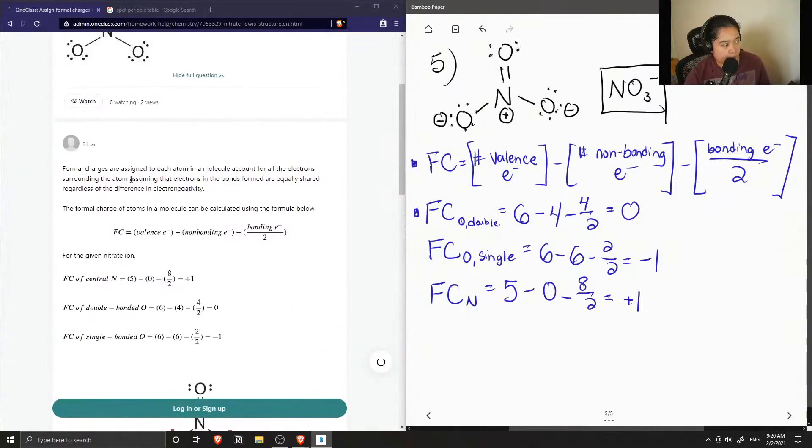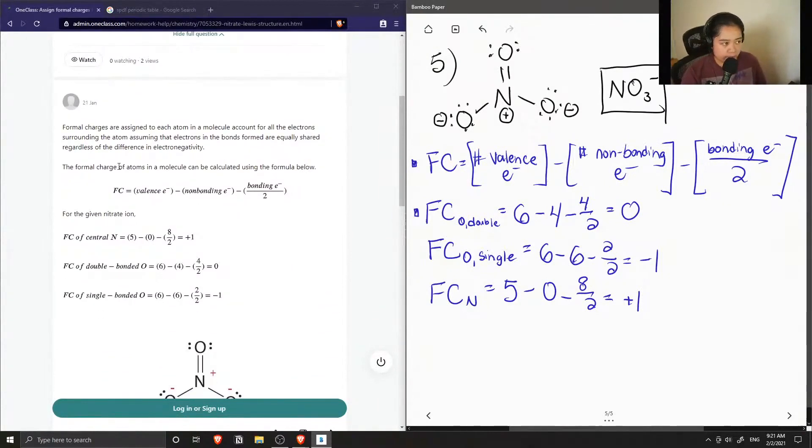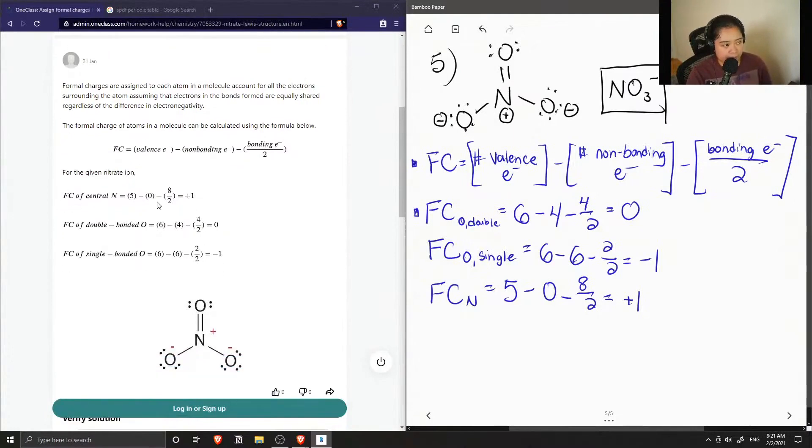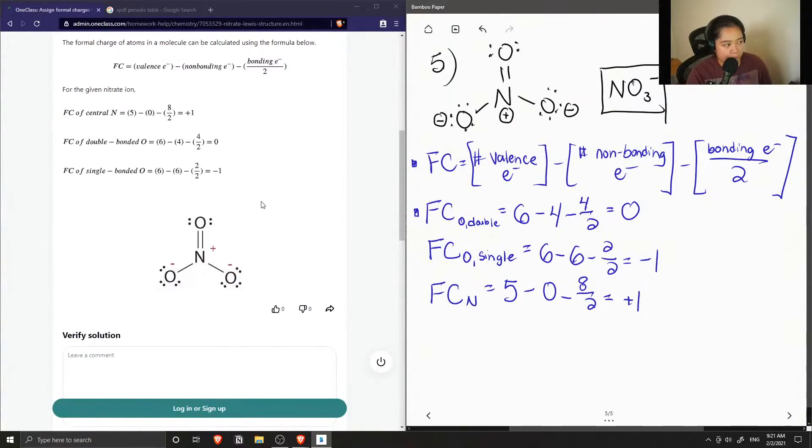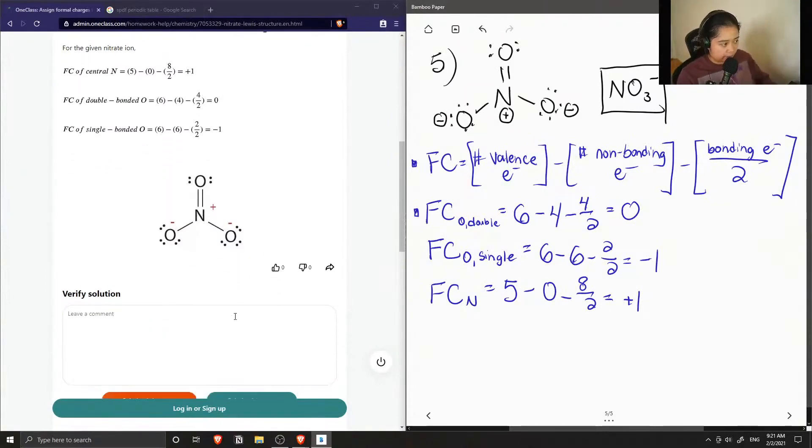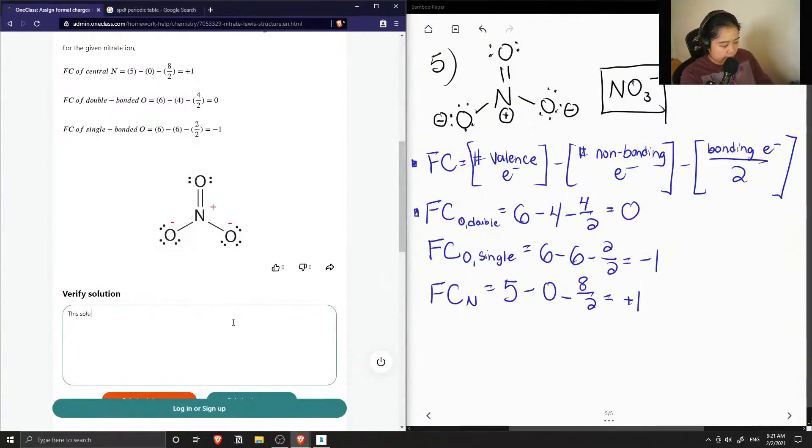The solution says that formal charges are assigned to each atom in a molecule, counting for all the electrons surrounding the atom, assuming that electrons in the bond formed are equally shared, regardless of the difference in electronegativity. The formal charge of atoms in a molecule can be calculated using the formula below - valence electrons minus non-bonding minus bonding divided by two. They also got the nitrogen to be plus one, the double bonded oxygen is zero, and the single bonded oxygen is negative one. So this solution is correct.